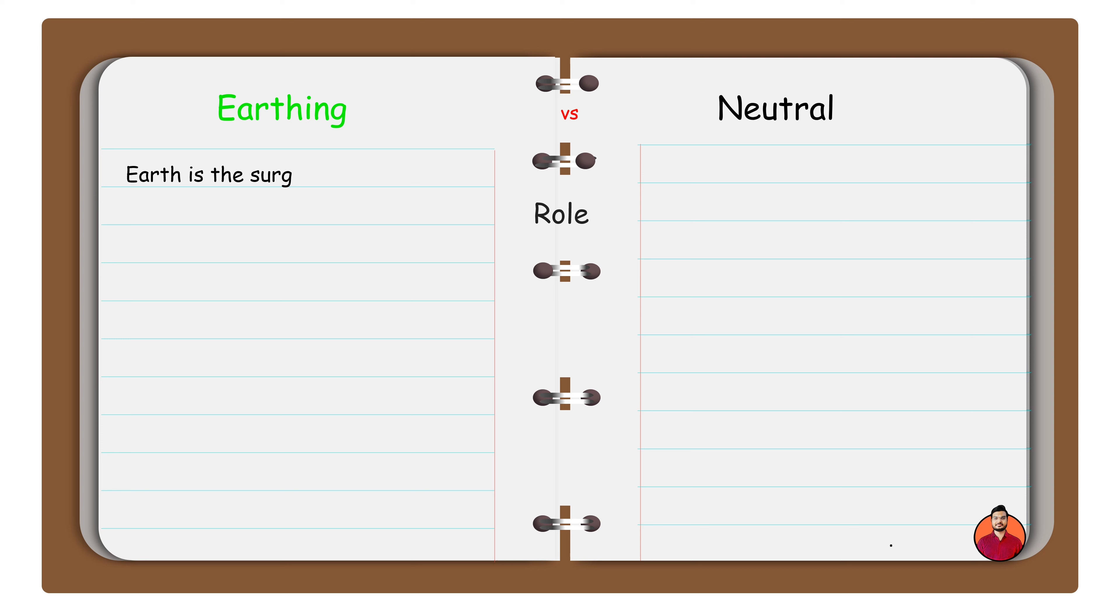Earth is the surging point of appliances. Neutral is the return path of the electrical current supply. It is also called a reference point.